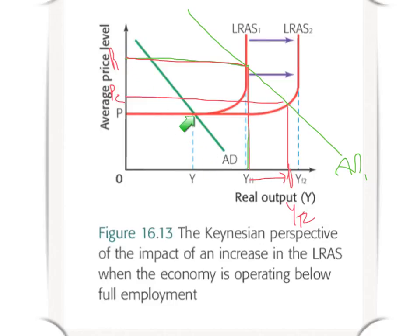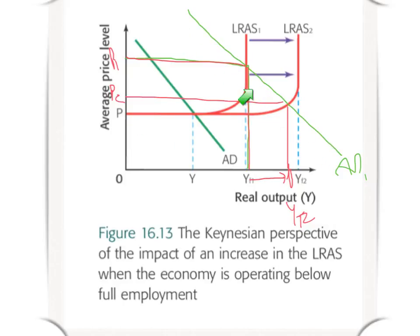I keep coming back to the same theme: Keynesian depends on the aggregate demand curve. Even if you shift that long-run aggregate supply curve and the aggregate demand is in the lower range, it has no effect on the actual real output of the country. But if the demand curve is further out, because of the way in which this curve is structured, then an increase in the long-run aggregate supply curve and an outward improvement in the factors of production will have an impact not only on price, but also on the quantity produced. That's the Keynesian view.